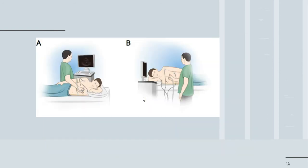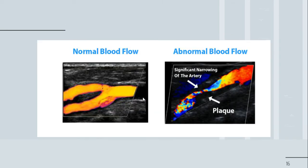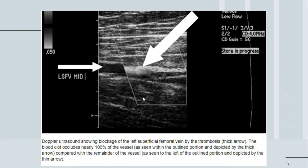Next we have the ultrasound of blood vessels. Here are pictures showing what a normal blood vessel looks like on ultrasound. Moving on, you can see plaque formation — one image shows normal blood flow and another shows disrupted blood flow due to plaque deposition. Next is a Doppler ultrasound showing blockage of the left superficial femoral vein in the leg, caused by thrombosis.